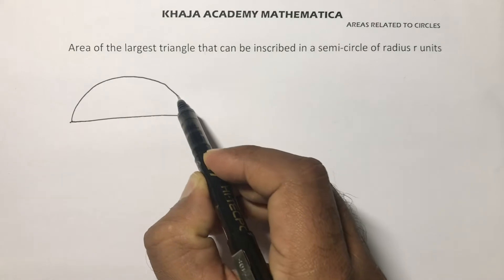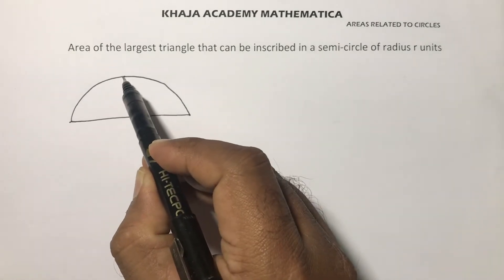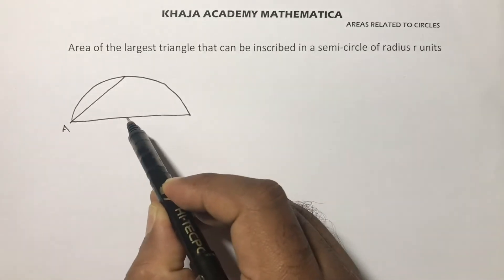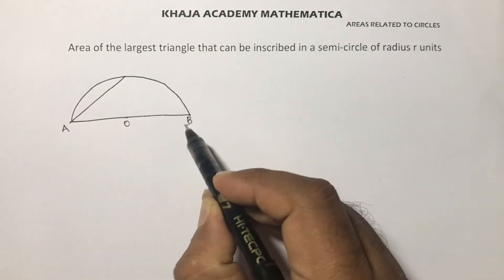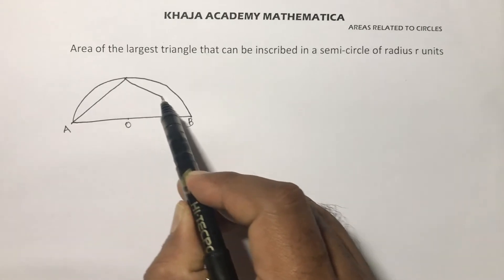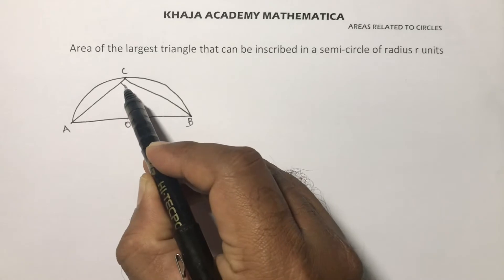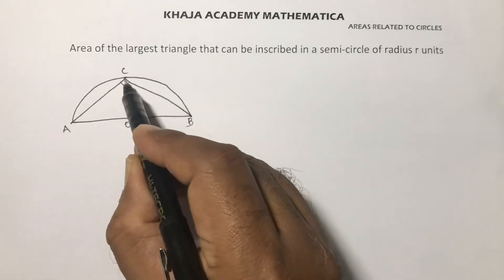In a semicircle, the largest triangle: you can take center O, AB as a diameter. You can take a triangle in the semicircle. The angle in a semicircle will be 90 degrees.